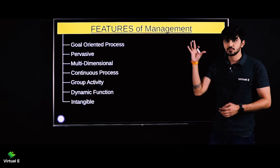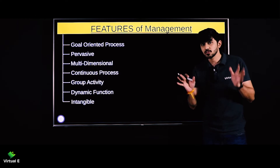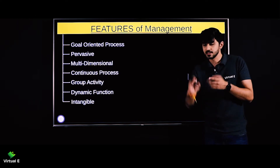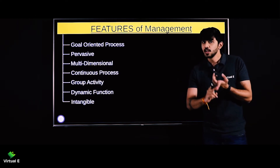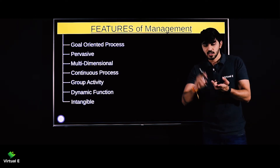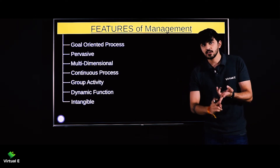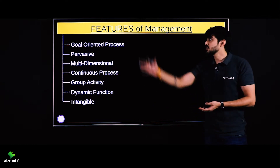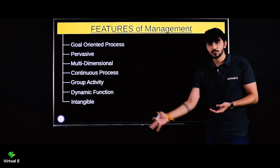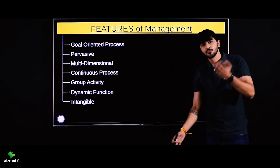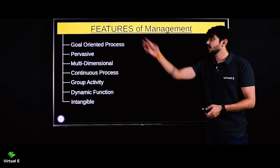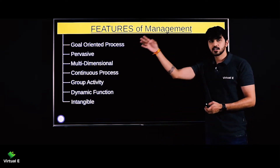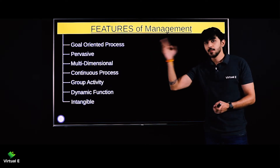Features of management — management kya hota, samaj me a gya — it is a process of doing things in an effective and efficient manner. Now let's see what are the features of management. First feature hota hai: goal oriented process.